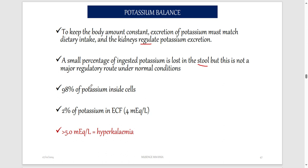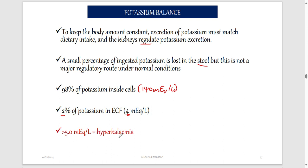98% of potassium is found inside cells — the intracellular concentration of potassium is about 140 mEq/L, while potassium outside the cell is only about 2%, which is 4 mEq/L. When talking about potassium balance, you refer to blood (ECF/plasma). The normal plasma concentration of potassium is 4 mEq/L. Greater than 5 mEq/L is hyperkalemia (too much), and below 4 mEq/L is hypokalemia.